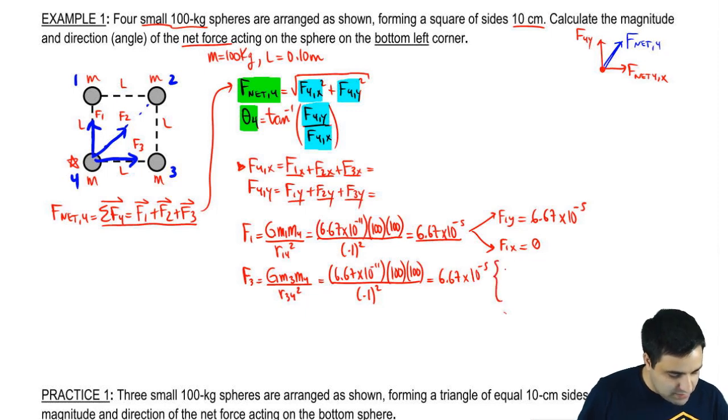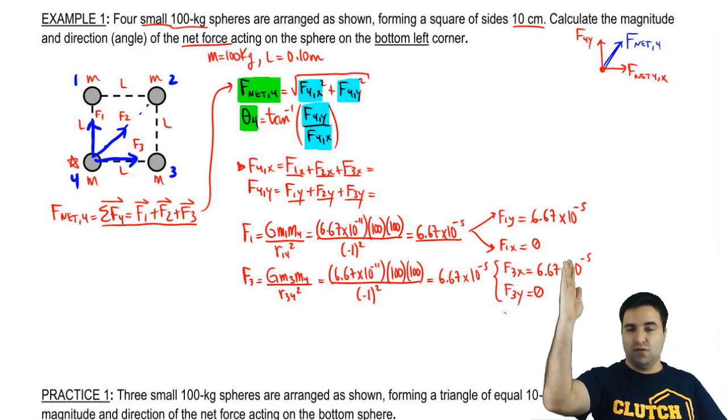When I split this, F3X and F3Y, notice that F3 is flat this way, so F3Y will be 0 and F3X will be 6.67 times 10 to the negative 5th. So it's the inverse of F1, F1 is on the Y, F3 is flat on the X.